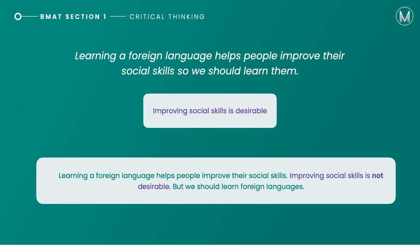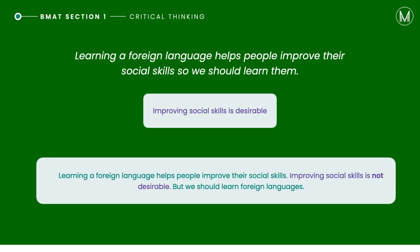Let's apply the negative test to the first option: improving social skills is desirable. Let's flip it — assume it's not desirable and insert that between the premise and conclusion. We get: learning a foreign language helps people improve their social skills; improving social skills is not desirable; but we should learn foreign languages. Clearly that doesn't make sense. We've seriously damaged the argument — the link between premise and conclusion — because why would we learn a foreign language if it improves social skills and we don't want social skills? So this seems to be the correct assumption.